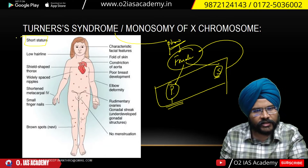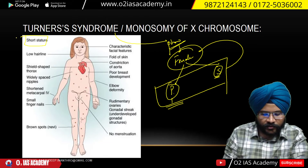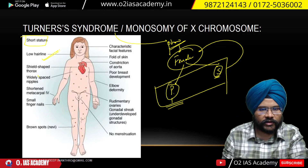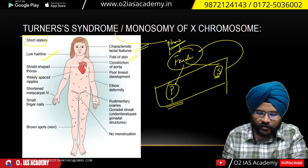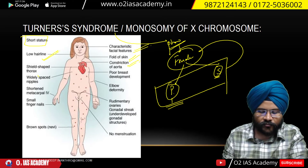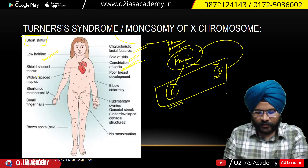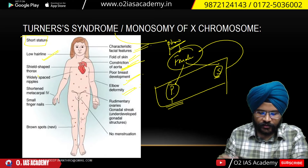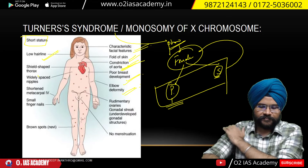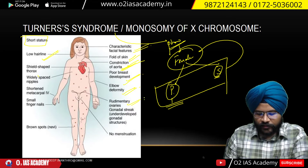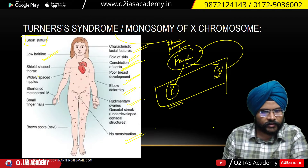The stature is short. Generally when you talk about monosomy or deletion, the stature remains small — short stature. The hairline is low, towards the front. Facial hair growth starts. A skin fold is visible here, and in some conditions the skin fold is slightly raised. Then you have constriction of the aorta — it's a blood pipe that goes to the heart. Then you have poor breast development, and elbow deformity where the bone comes into a slight curvature. The ovaries start forming fibrous streaks — they are rudimentary. The menstruation cycle does not properly form.